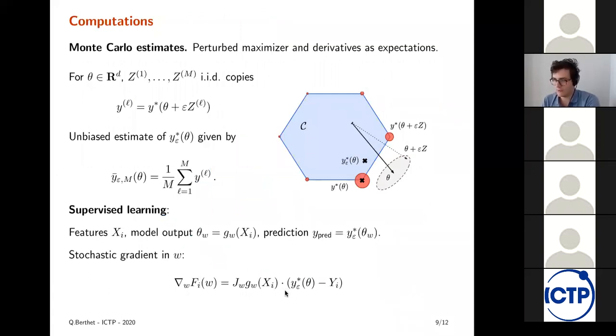And one of the reasons this is very practical and very convenient is that everything can be computed through Monte Carlo estimates. So the perturb maximizer and the derivatives are written as simple expectations. So we have the full formulas in the paper. And what you can do when you are at a given theta is just generate yourself IID copies of the noise. Solve through a linear optimization problem many times. So you get empirical values for all these buckets, for the size of these buckets in red. And you get an unbiased estimate of the softmax by averaging them. And you can do the same thing for derivatives, Jacobian, et cetera.